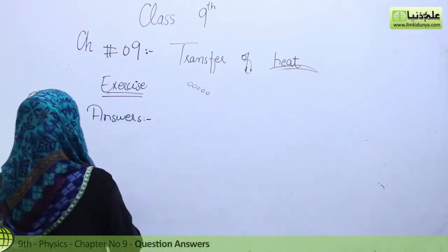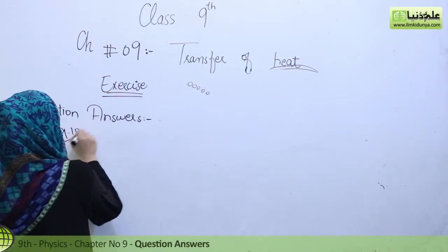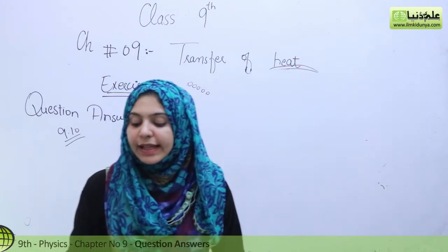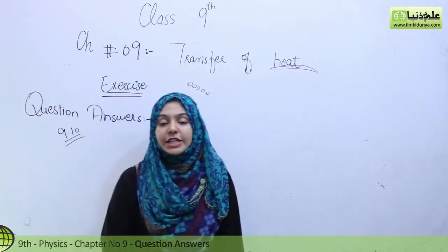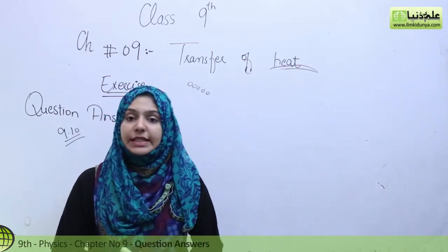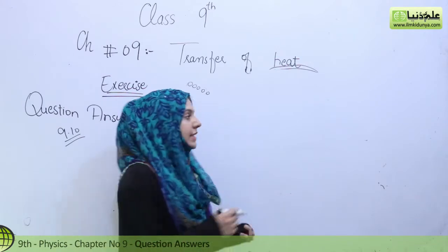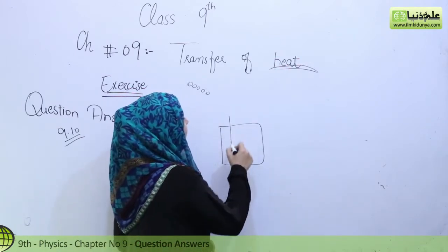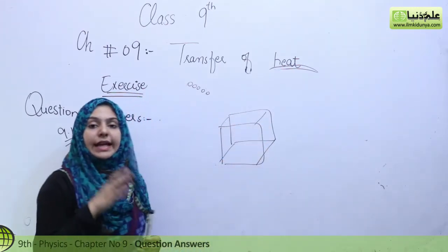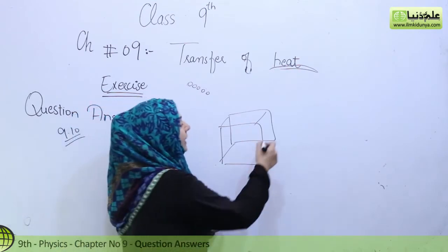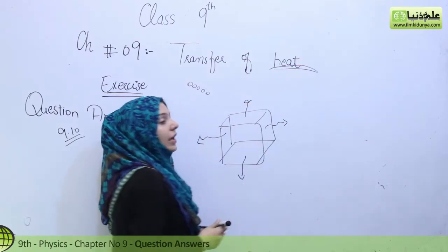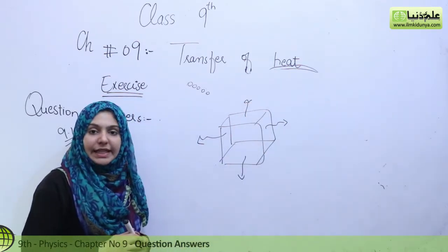Question 9.10: How can various surfaces be compared using a Leslie cube? In the Leslie cube, basically different sides are selected with different colors. Each side has a different color, and depending on that color, the amount of radiation each side emits or absorbs will differ.